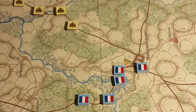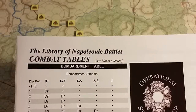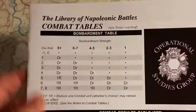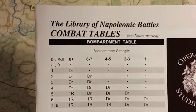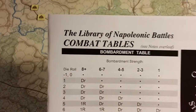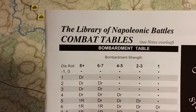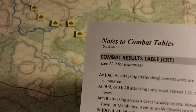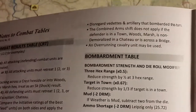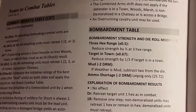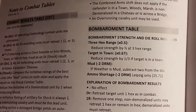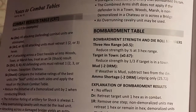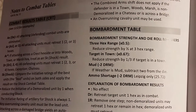On the combat tables card we have a bombardment table at the top — bombardment strength with a 1d6 roll and some modifiers. There are DRMs and strength modifiers noted in the combat table notes section.